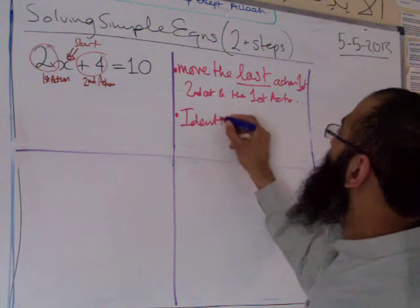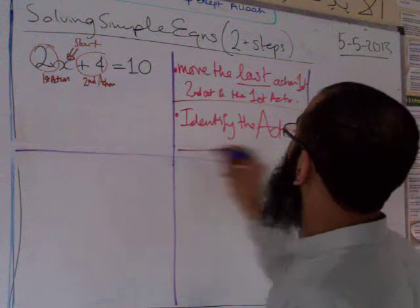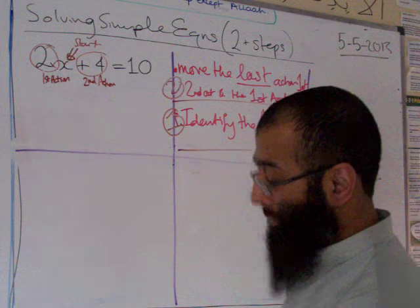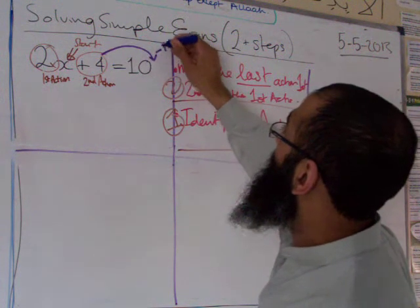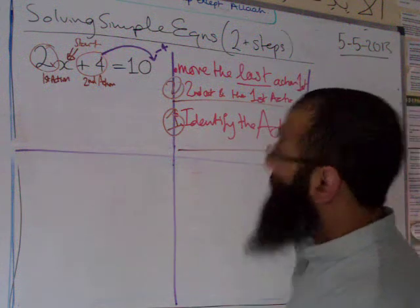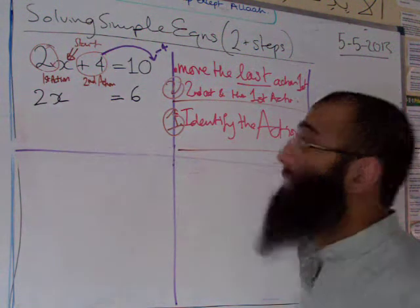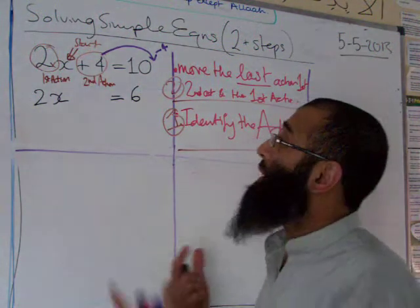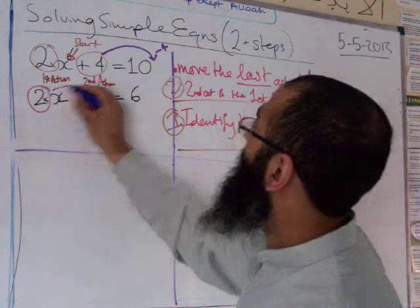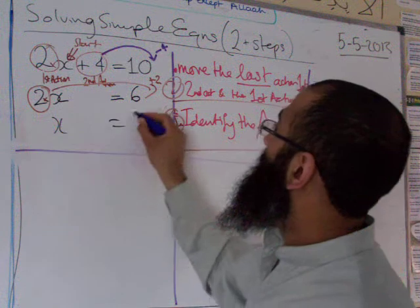Before moving, identify the actions. Then move them: second action goes first, then the first action. The opposite of add four is minus four. So 10 minus 4 gives us 6. Copy the 2x down — equals 6. Now opposite of times by two is divide by two, so x equals 3.